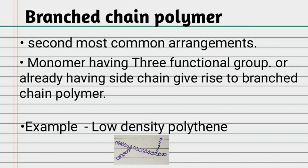High density polyethylene has a compact packing arrangement and is linear. The second most common arrangement is the branched chain polymer, where monomers have three or more functional groups or already have side chains. An example of branched chain polymer is low density polyethylene.